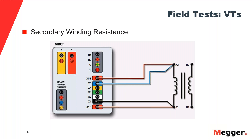Secondary winding resistance: we want to make sure the circuit is still intact, with no shorted turns, no high-resistance connections from the terminals of the VT all the way to the control section of the circuit. We also use that resistance value for modeling the VT. The method involves connecting to the secondary side, injecting a DC current, and measuring the resulting voltage drop to calculate the resistance.